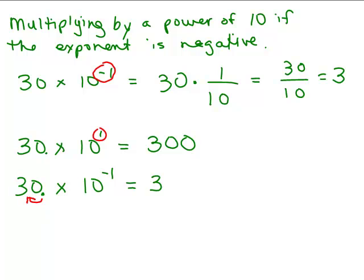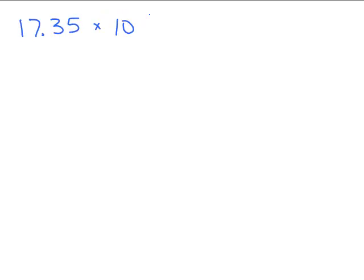Let's try that on another problem: 17.35 times 10 to the negative 1. This means divided by 10 to the positive 1, or times 1 tenth. Using the shortcut, we move the decimal one place to the left. If it's a negative exponent we go left; if it's a positive exponent we go right. So our answer is 1.735.